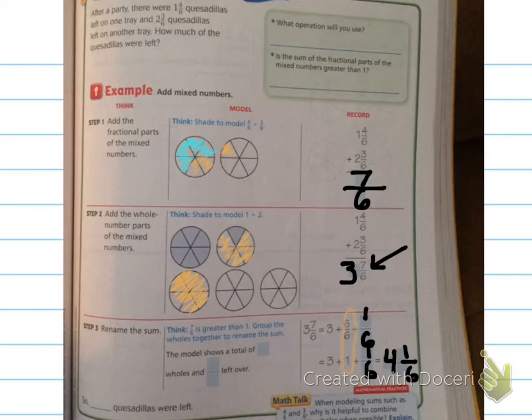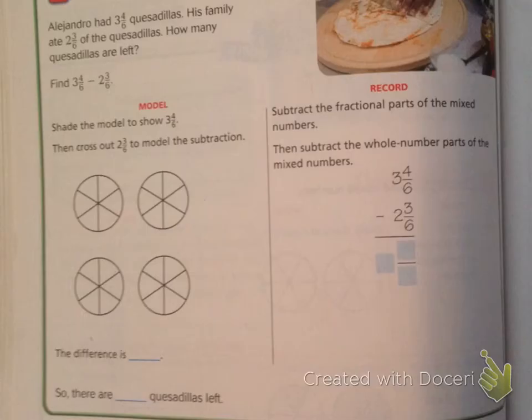You add up the whole numbers, you add up the fractional parts, and then if you're left with an improper fraction, you need to change it so it's just a mixed number. Let's try one where we're subtracting. Alejandro had 3 and 4/6 quesadillas. His family ate 2 and 3/6 of the quesadillas. How many quesadillas are left? This says shade the model to show 3 and 4/6. So let's shade 1, 2, 3, and 4/6.